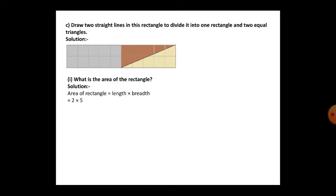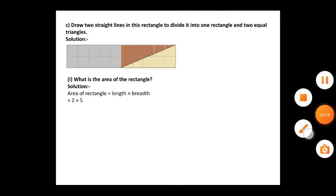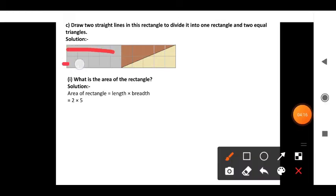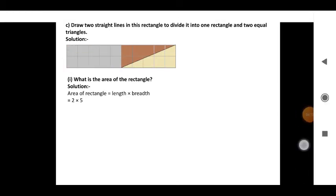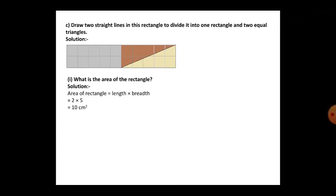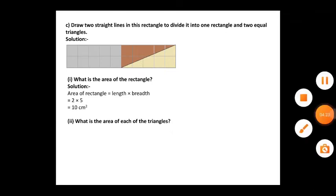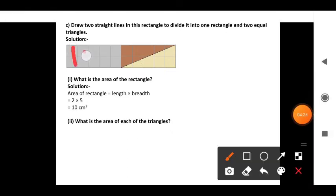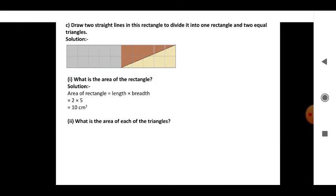The formula for area of a rectangle is length into breadth. How many rows are there here? There are 2 rows. And how many columns? There are 1, 2, 3, 4, 5 - there are 5 columns. So that is the reason: 2 into 5. So 2 into 5 is 10 square centimeters. Or you can count the squares inside and you will get 10 squares only. So the area is 10 square centimeters.